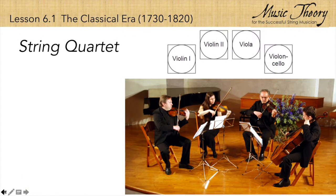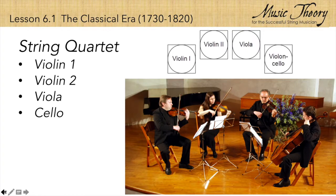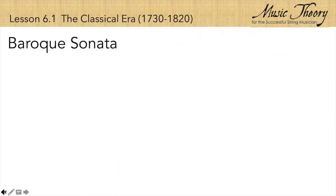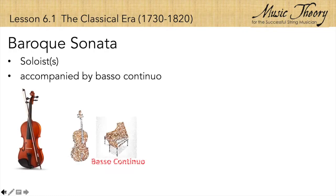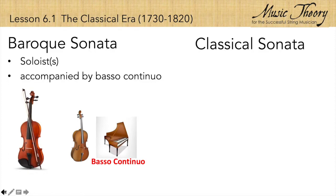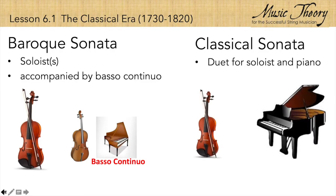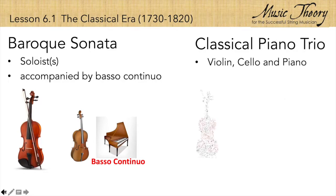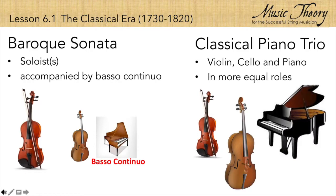New classical forms of music included the string quartet for two violins, viola and cello, as well as the piano trio and classical sonata. The older Baroque sonata was made up of soloists accompanied by a basso continuo. In the classical sonata, the harpsichord is replaced by the piano in a duet in which both instruments share more equal roles. The new classical piano trio included a violin, cello, and piano, very similar to the older Baroque violin sonata, but the three parts in the classical trio shared more equal roles.